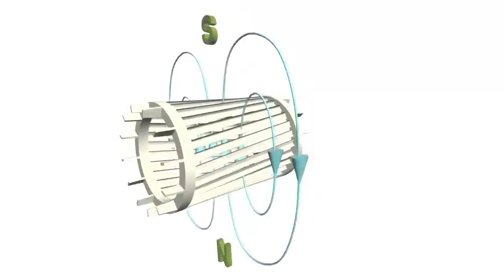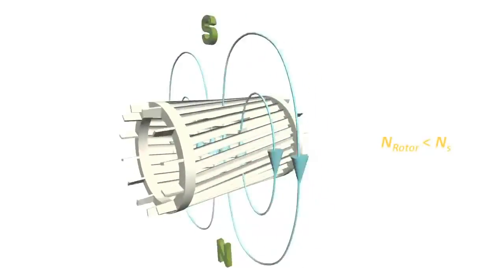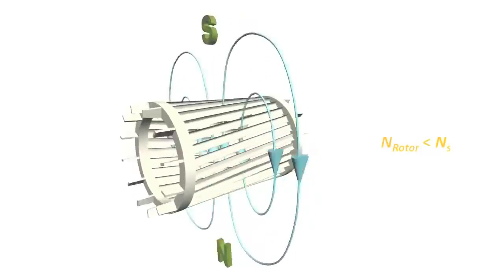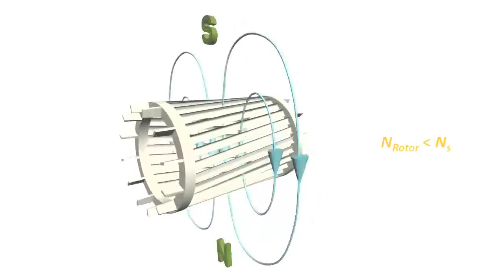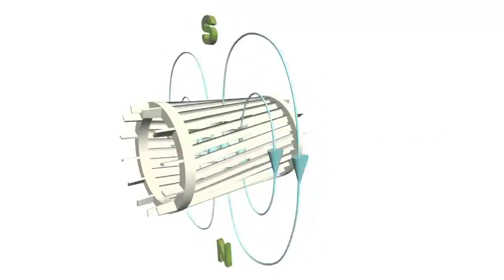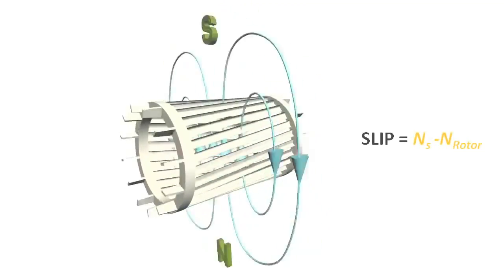In short, the rotor will never be able to catch up with the speed of the magnetic field. It rotates at a specific speed which is slightly less than synchronous speed. The difference between synchronous and rotor speed is known as slip.